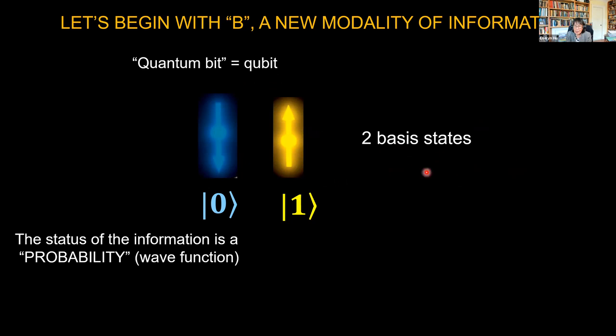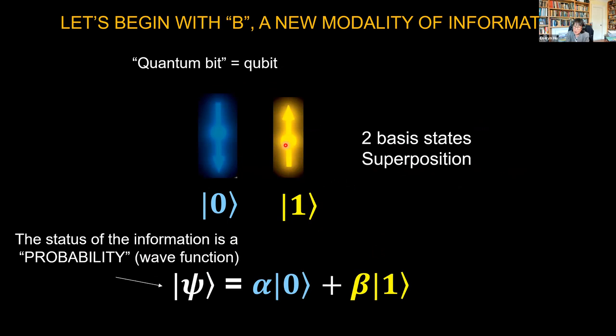This is still the basis states of the quantum world. But what's different now is something that may be weird to you: the status of the information is not either zero or one, but it's a probability function. We express this probability—we like to use this word psi.